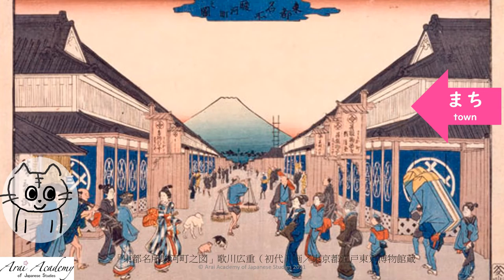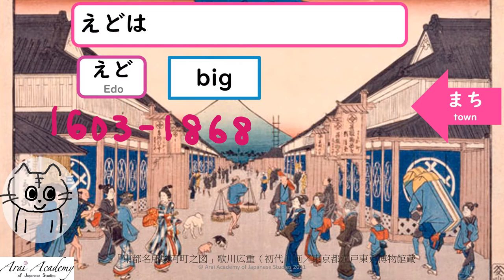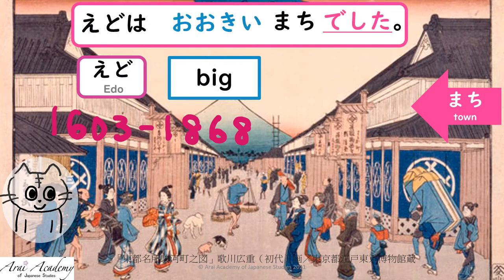Today, let's talk about the past. Edo is now called Tokyo — it was a big town. Then you say: Edo wa ookii machi deshita. Repeat after me: Edo wa ookii machi deshita.